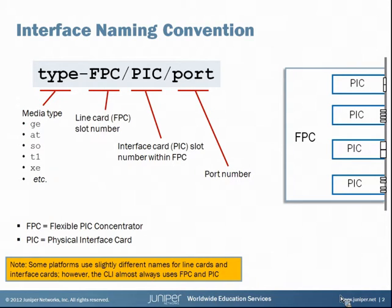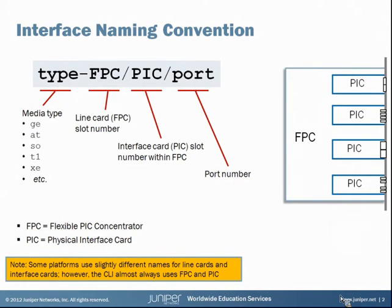The next element is PIC — these are Physical Interface Cards. You can see on the diagram on the right that the physical interface cards are the actual media type cards that you slide into the FPC, and then the whole thing goes into the chassis. So the PIC value is the interface card number. And lastly, the port number — the specific port on the particular PIC that you've installed.